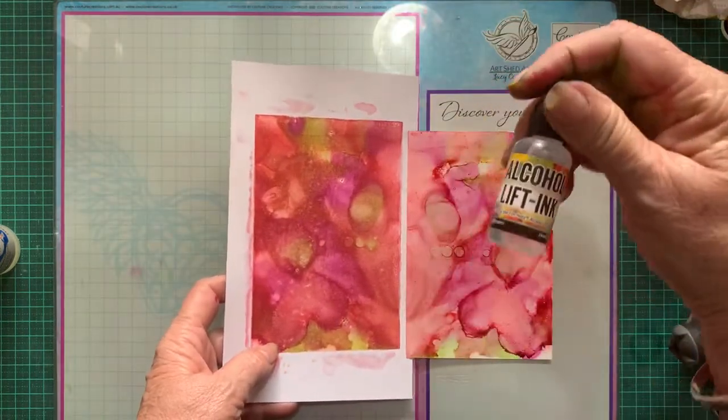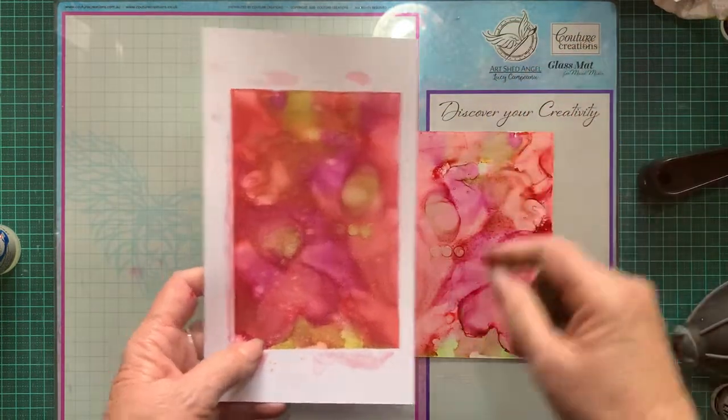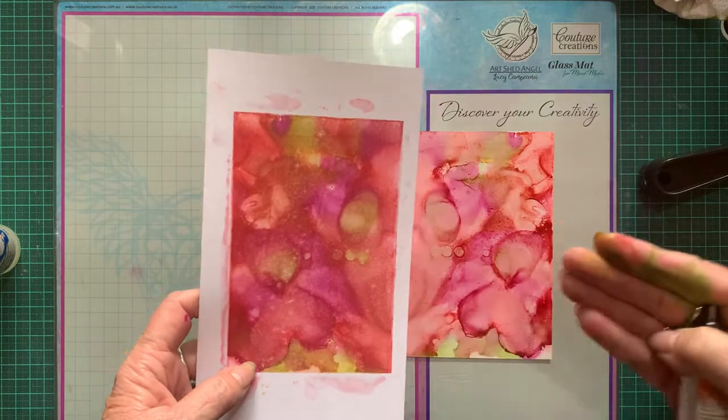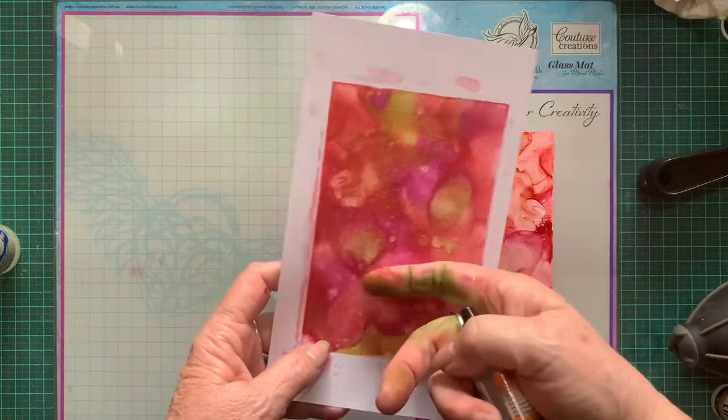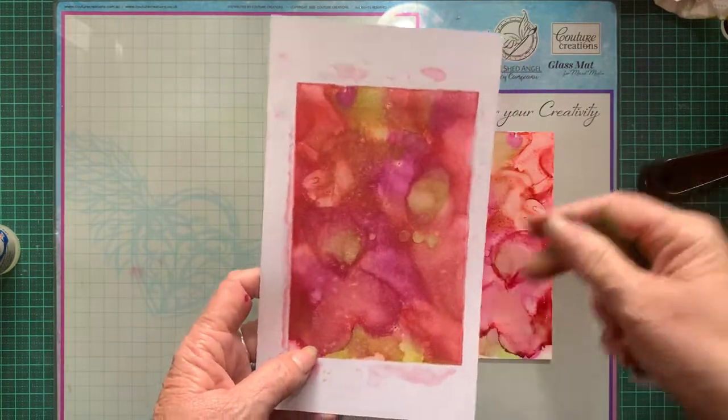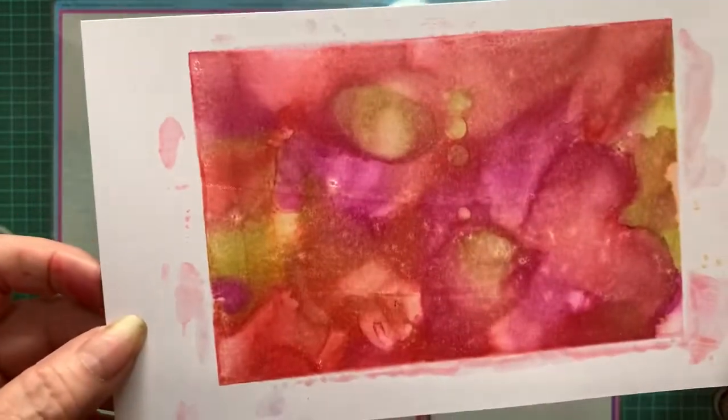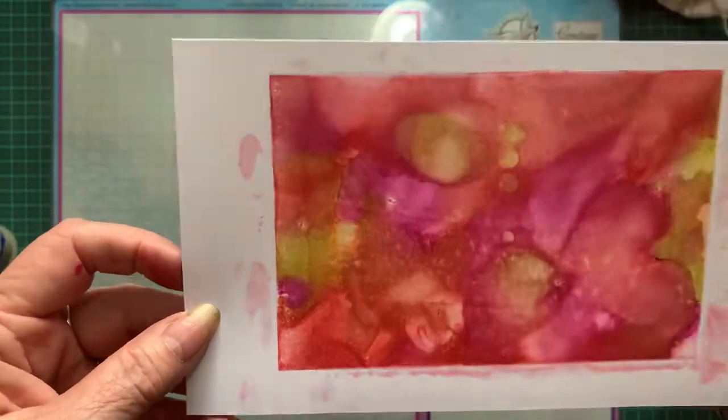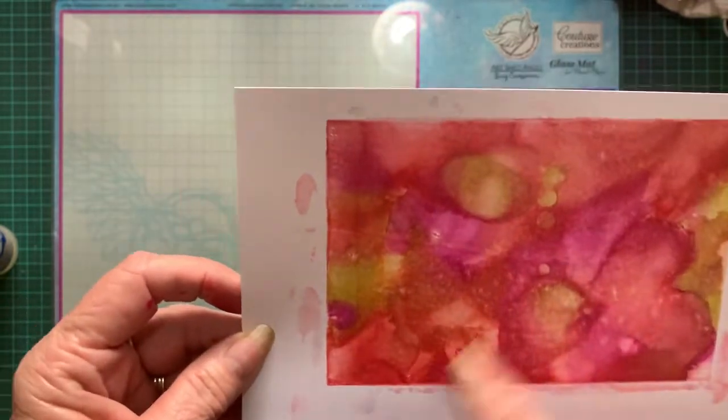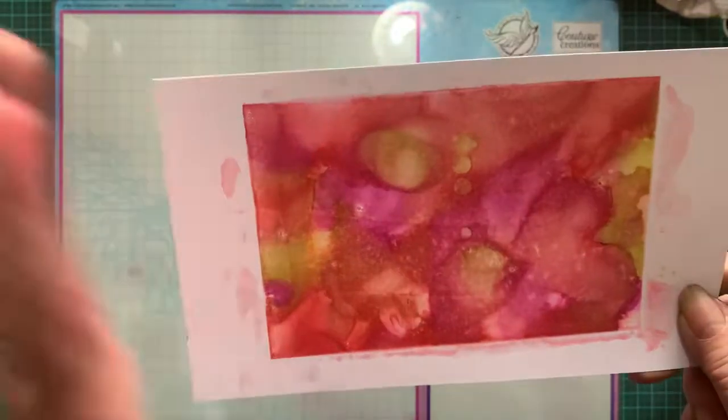Now you could reapply your ink, the alcohol lift ink, and get another print. Every time you do another print, what you print will get lighter and lighter. But this now can be used to stamp on. You just trim it up to the size you want and then you can just stamp on that as you would normal cardstock.